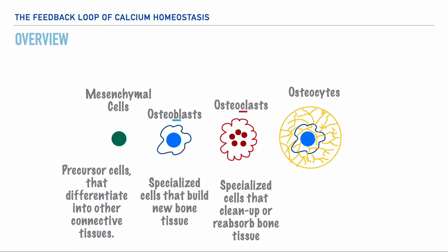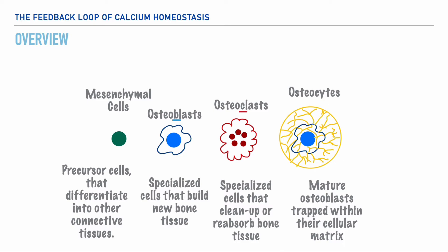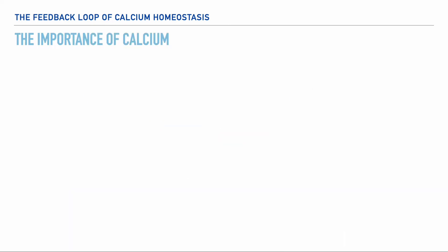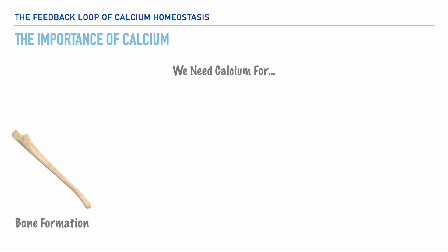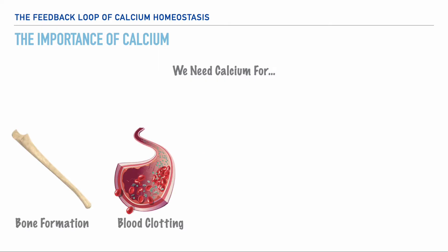And last but certainly not least, we also have osteocytes. Osteocytes are simply osteoblasts that have matured and have become entrapped in their cellular matrix. So within our bones, we have deposits of calcium. To be more specific, calcium is the most abundant mineral in the body, and we need calcium for things such as bone formation, blood clotting, muscle contractions, and nerve conduction.